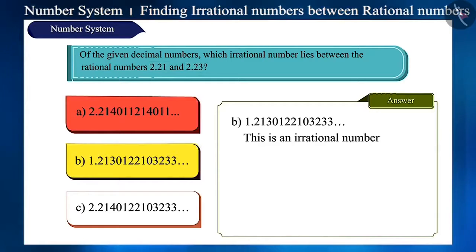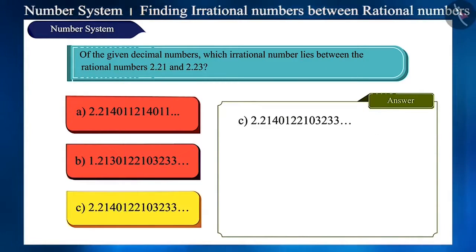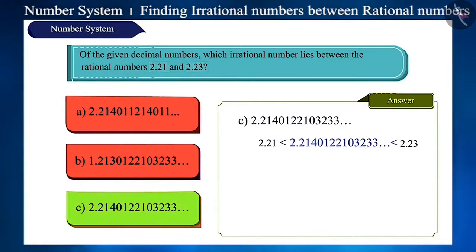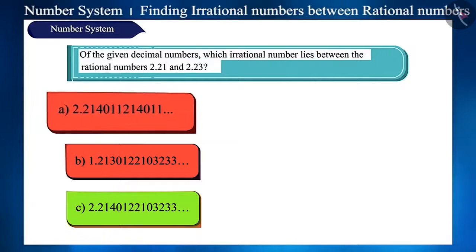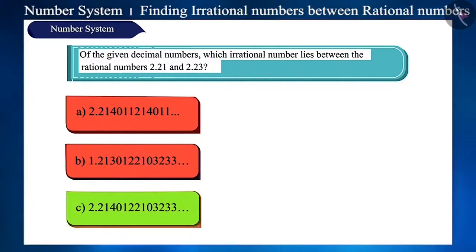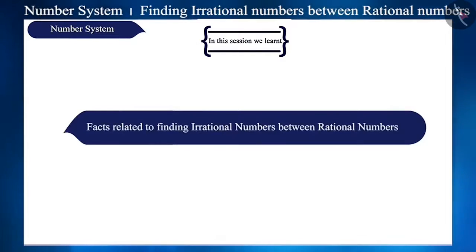The second option is an irrational number, and it seems to be between these two numbers if we look to the right of the decimal. But if we shift our focus to the left of the decimal, there is a 1, which means it is not located between the two numbers. The remaining option C is an irrational number and lies between these two rational numbers. So friends, understand the questions thoroughly — pay full attention to each option before answering. In this session, we discussed more facts related to finding irrational numbers between rational numbers. See you in the next video.